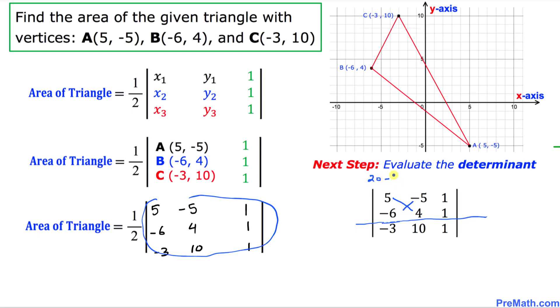Negative 5 times negative 6 is 30, positive 30. So that is going to give us negative 10. This negative 10 is going to go in the opposite direction, right up here.